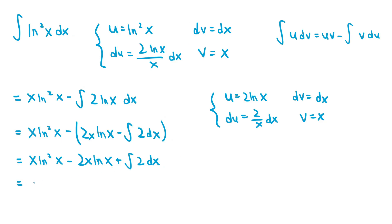Since the integral of 2 is just 2x, the final answer is x ln squared of x minus 2x ln x plus 2x plus some constant c.